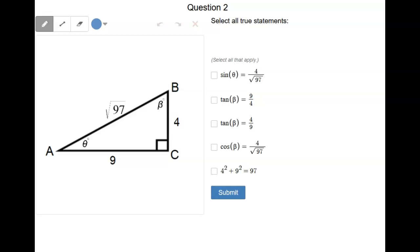Question two, select all the true statements. So we have a right triangle here and we know the three side lengths and we're basically just trying to identify which of these trig functions are correct. So first let's go through and try to decide whether or not these are correct.